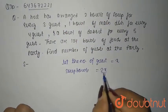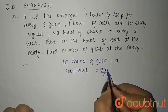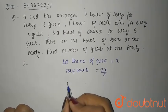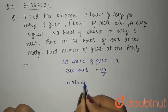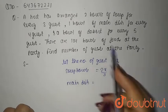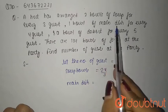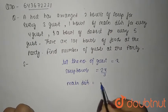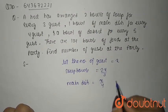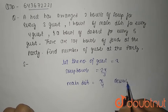That is for every three guests there are two bowls of soup. Now for main dish, a bowl of main dish for every four guests, that is x by 4.